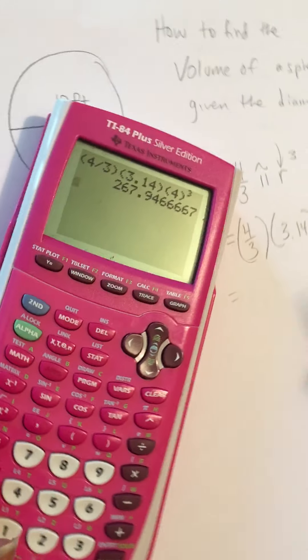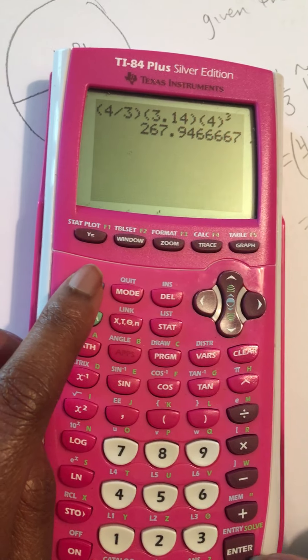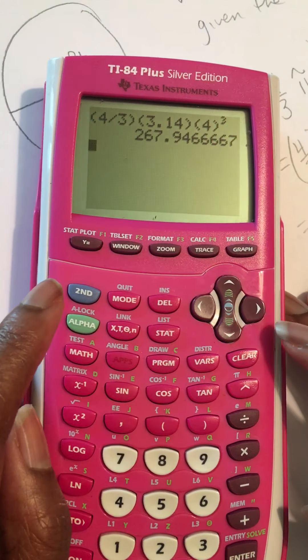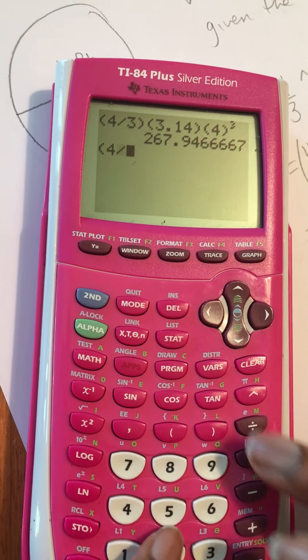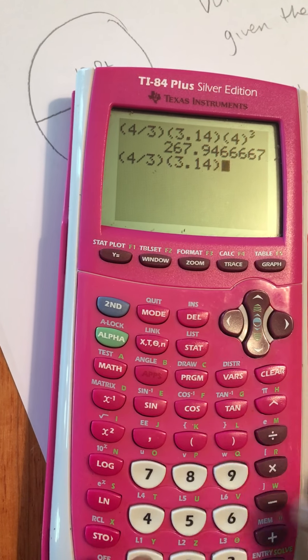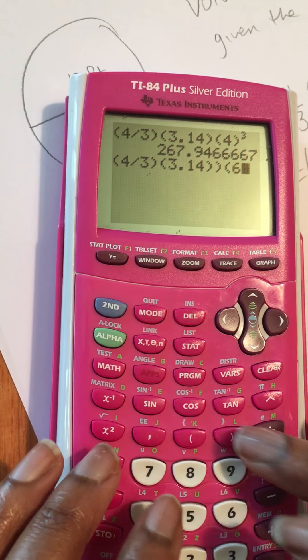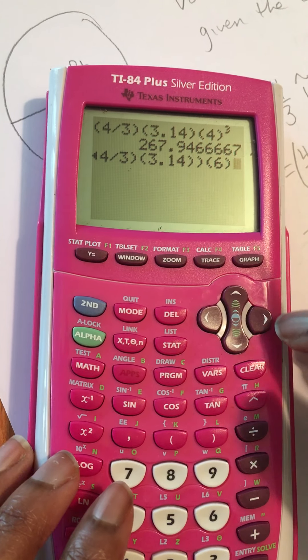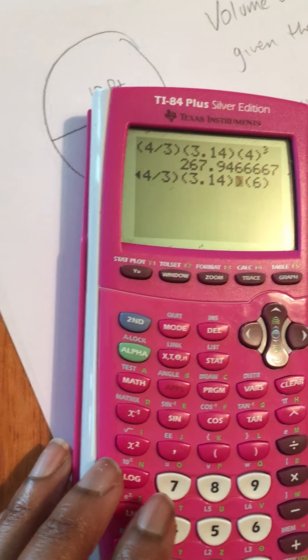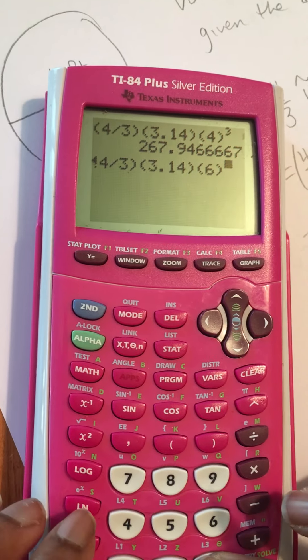Again, I'm going to use my calculator. If you have your calculator, you can actually just go second enter and your old answer comes right back up. But I'll do it the old way. 4 divided by 3, parenthesis 3.14, and parenthesis, parenthesis 6, and parenthesis cubed. Do I have too many parenthesis? Let me try it over here. Parenthesis 6 to the third power.